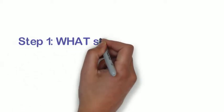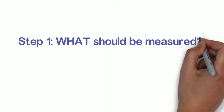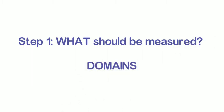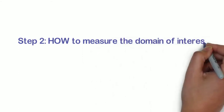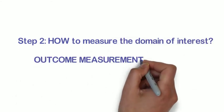First, we decide on what should be measured across trials. We call these domains. Second, we decide on how we should measure the domain of interest. We call these outcome measurement instruments, or just instruments for short.